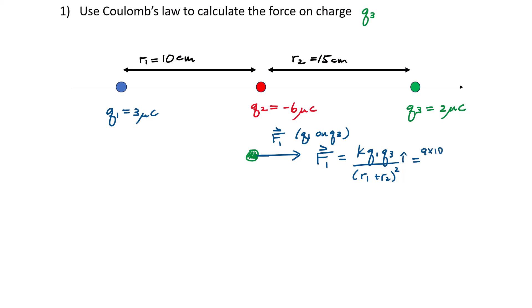The K constant is 9×10⁹. Q1 is 3 microcoulombs (10⁻⁶), Q3 is 2×10⁻⁶. The total distance is 10 cm plus 15 cm = 0.25 meters, and don't forget to square it. I'm representing the direction with i-hat, indicating the positive x direction. Substituting all numbers gives a force of 0.864 newtons in the positive x direction — that's force F1.